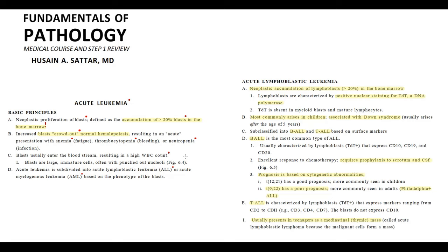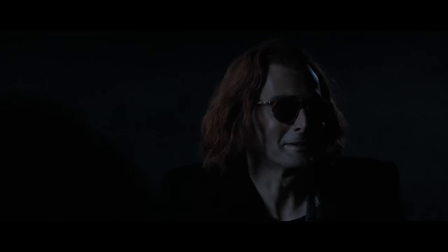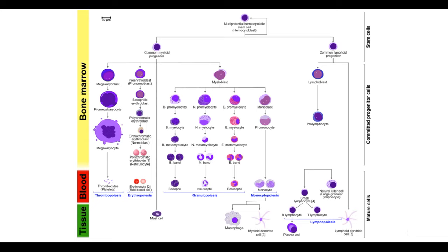To explain the pathogenesis of acute leukemia, we need to recall normal hematopoiesis. Hematopoiesis can be subdivided into myelopoiesis and lymphopoiesis. The final products of lymphopoiesis are B and T lymphocytes. In normal conditions, to make a mature lymphocyte, stem cells differentiate into a common lymphoid progenitor cell, which then undergoes further differentiation into lymphoblasts. Lymphoblasts mature into prolymphocytes, from which we make B and T lymphocytes.